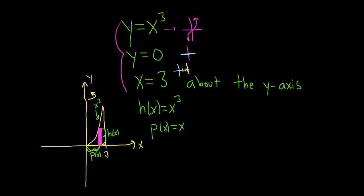And x will vary from 0 to 3. So the volume is equal to 2 pi. Remember, shell has the 2 pi. And we're going from 0 to 3. And the formula is pH. So it'll be x times x cubed dx.